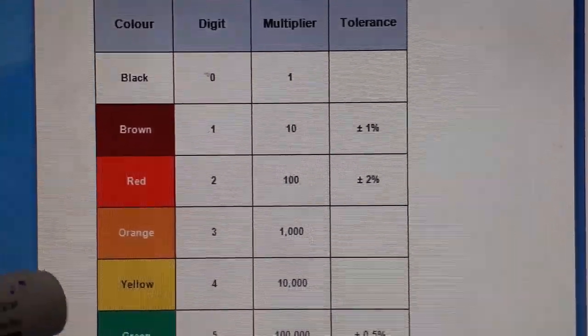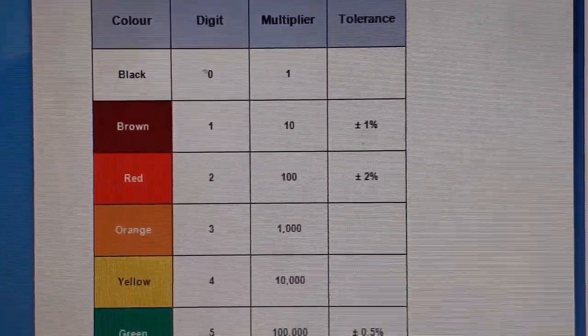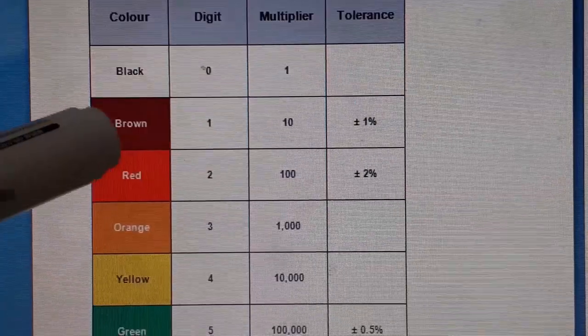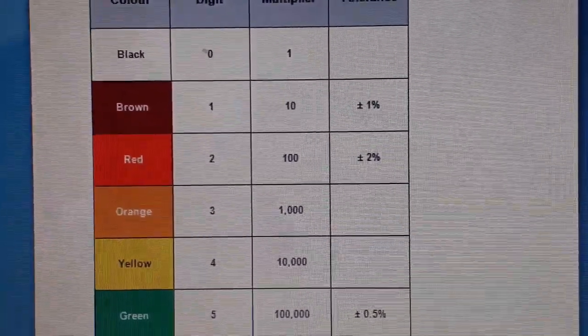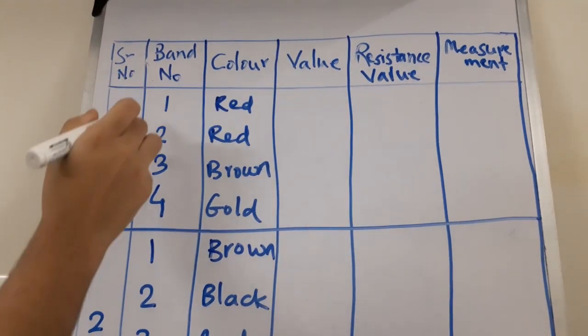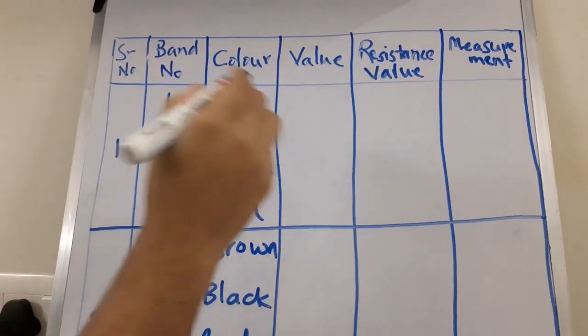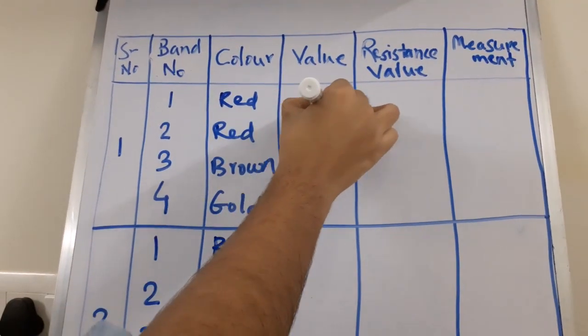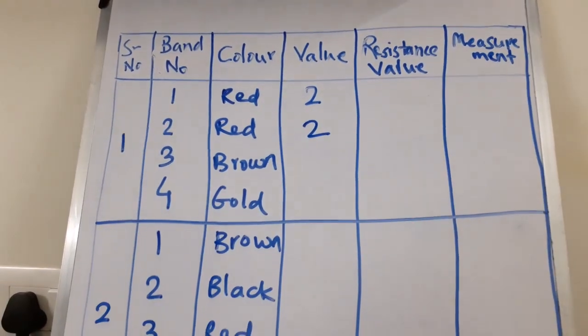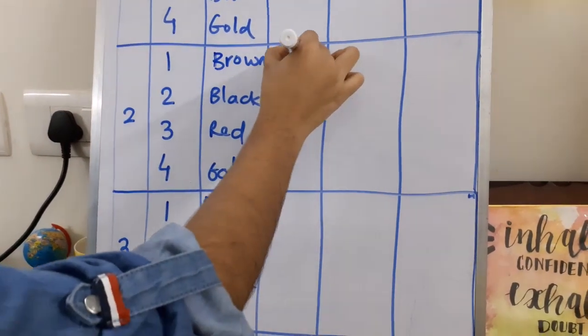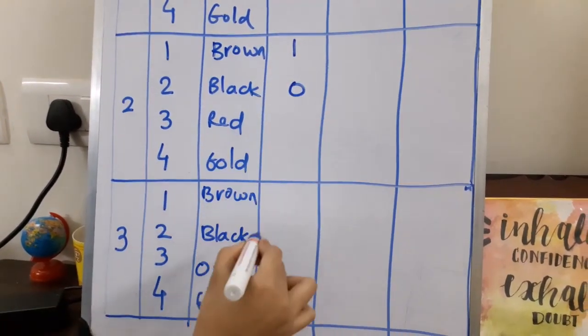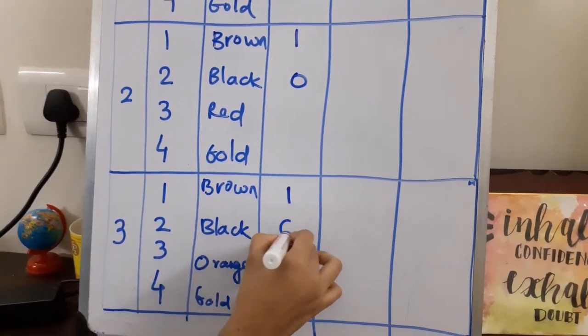So here we are going to use only four values. Black is zero, brown is one, red is two, and orange is three. The first two bands are for the digits, so I will put only the digit value here: two and two. In the same way for the second and third resistor: one, zero, and one, zero.